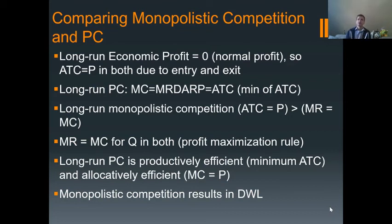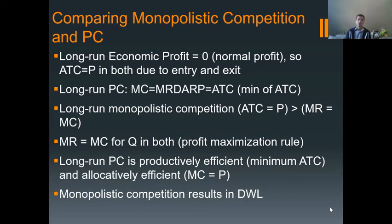Monopolistic competitors are not there. The ATC might equal the price, but it's not at the minimum of the ATC, so it's not productively efficient. And price is greater than where your MR equals MC level — your demand is not equaling your MC. So if your demand isn't equaling your MC, you are not going to be allocatively efficient either, whereas your perfectly competitive market is going to be allocatively efficient.